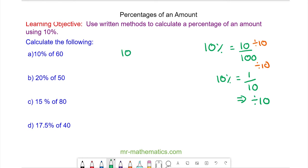We're going to work out 10% of 60. To do this we do 60 divided by 10 which is 6. So 10% of 60 is 6.